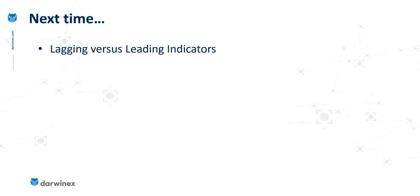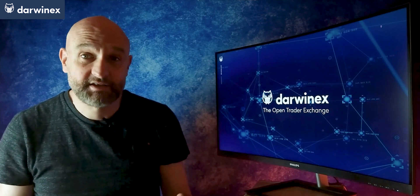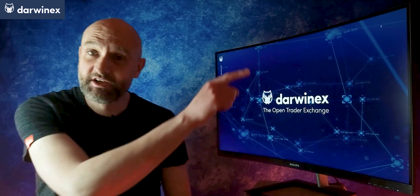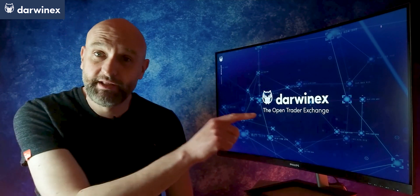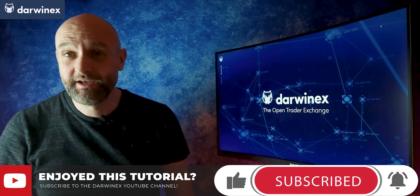This next episode will be the last in the mini-series. We're going to look at some of the implications of lagging indicators versus leading indicators, the pros and cons of both, and also take a look at some different moving averages from the perspective of their behaviour and the different ways we can use each of them. Please subscribe if you want to be notified when that's available, and remember to click the link at the bottom if you're not aware of DarwinX and the great platform we provide for traders. Until next time, trade safe.